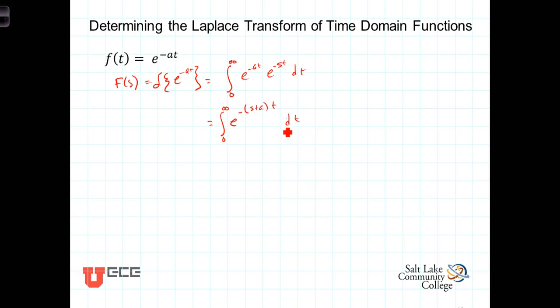Now when we do the integration, we're going to kick out a 1 over negative s plus a in front, which gives us 1 over negative s plus a, times e to the minus s plus a t evaluated at, and let's just be explicit here,